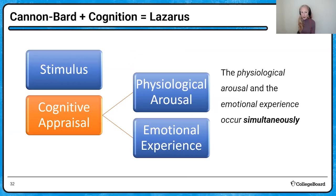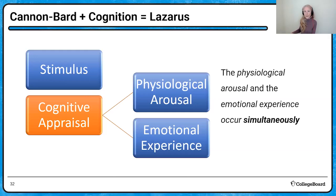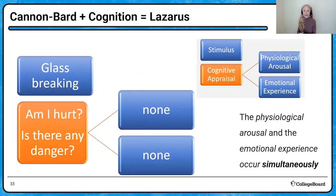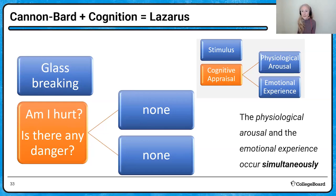Lazarus took a look at Cannon-Bard and said there's a stimulus, but there's a cognitive appraisal of that stimulus first — different from Schachter-Singer, who said you cognitively appraise the arousal. Lazarus says before any arousal or emotional experience, you appraise the stimulus. With the glass breaking, you immediately think: am I hurt? Is there any danger? If the answer is no danger, you won't have physiological arousal or emotional experience. But if you've worked as a waiter, you hear glass breaking and think it's a disaster that has to be cleaned up.